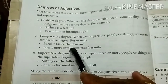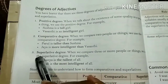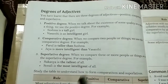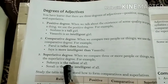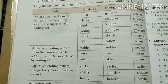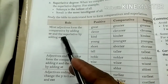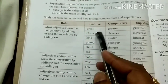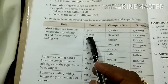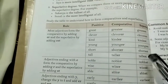In comparative degree we use 'than,' and in superlative degree we use 'the' before the adjective. For example: tall — taller — tallest. Most adjectives form the comparative by adding ER and the superlative by adding EST: great/greater/greatest, clever/cleverer/cleverest, kind/kinder/kindest, young/younger/youngest, short/shorter/shortest, tall/taller/tallest.